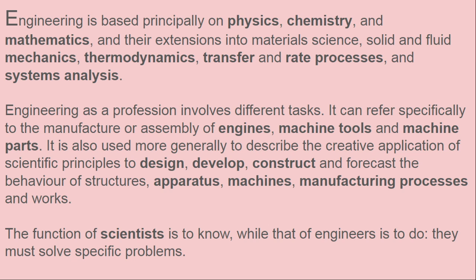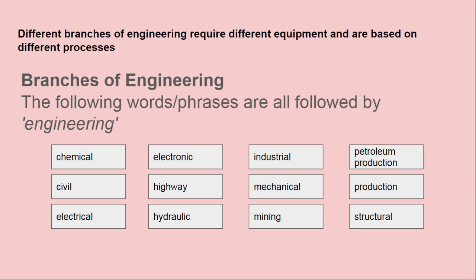The function of scientists is to know, while that of engineers is different. Branches of engineering require different equipment and are based on different processes.